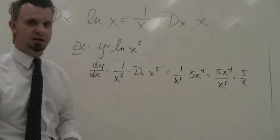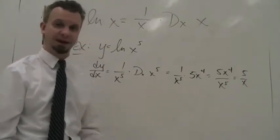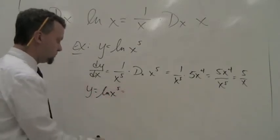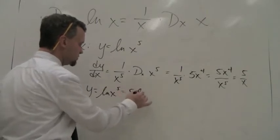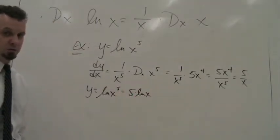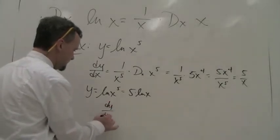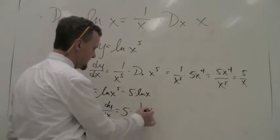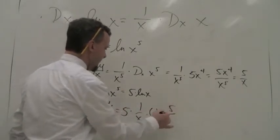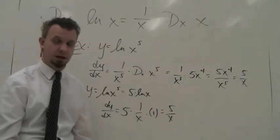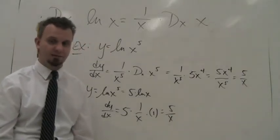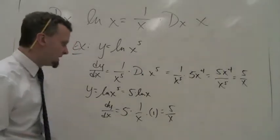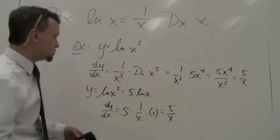There's another way using log properties. You can take y equals ln(x⁵) and use the property to put the power in front: 5 times ln x. To derive 5 ln x, leave the 5 out, the derivative of ln x is 1 over x times 1, and you get 5 over x just the same. Either way works — you pick which is easier for you. You can use log properties to your advantage when applicable.